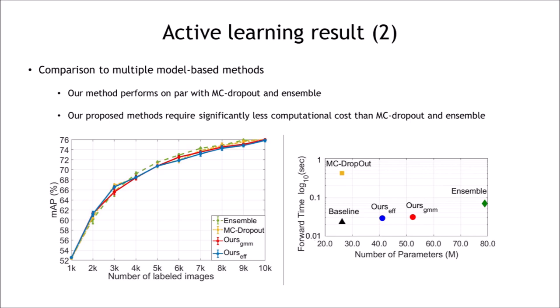We compare our active learning approach with multi-model-based methods on Pascal VOC dataset. As shown in the left figure, our method performs on par with MC Dropout and ensemble-based methods. Importantly, our approach uses a single forward pass of a single model to estimate the uncertainties. This is much faster compared to MC Dropout and ensembles. And our model size is much smaller than ensemble as shown in the right figure. Therefore, our method provides the best tradeoff between accuracy and computational cost.